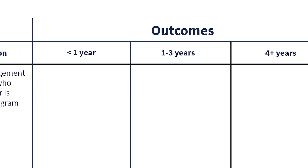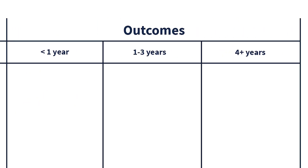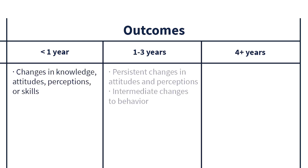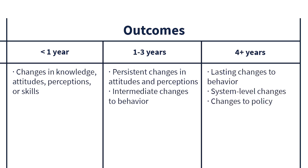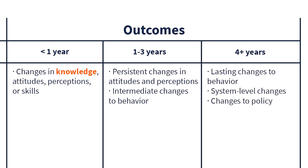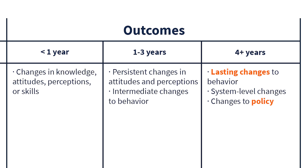Finally, there are outcomes. Outcomes are the actual effects of your program on participants. Outcomes are categorized as short, intermediate, or long-term. For example, a change in knowledge is often a short-term outcome, while fundamental changes to participant behavior or to public policy are considered long-term.